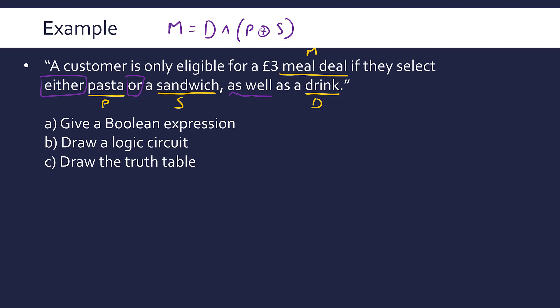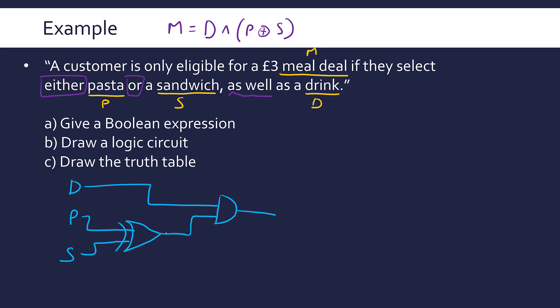Let's draw the logic circuit, also called a logic diagram. We've got three inputs: drink, pasta, and sandwich. Things in brackets are dealt with first, so connect P and S using an XOR gate — that's an OR gate with an extra curve at the back — with the two inputs connected. Then connect the drink and the output of the XOR gate into an AND gate, which has a flat back. The output of that AND gate leads to M. That is our logic circuit for this problem.